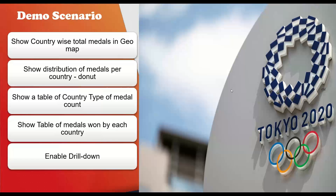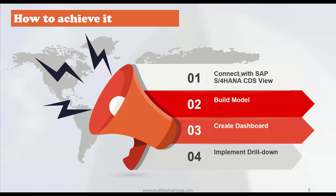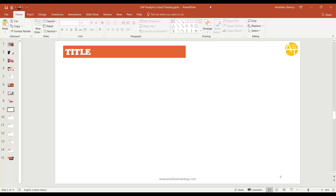To achieve this demo, we will take the following path. First, we will create a connection from our SAC system to the SAP S/4HANA system. We will use a data model called a CDS view, then build a model in SAC. After creating the model — which is the foundation for building a dashboard — we will build a dashboard in Analytics Cloud and finally add drill-down capabilities. Before we move on, let me explain in detail what exactly exists in our system today.